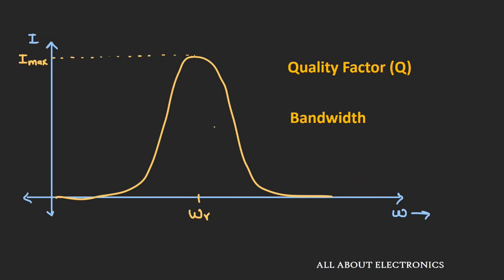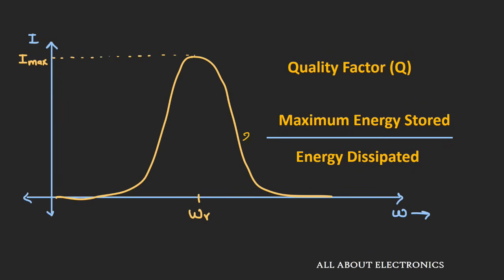Let's see them one by one. First, let's talk about the quality factor. This quality factor is defined as 2π times the maximum amount of energy stored across the element in the circuit, divided by the energy dissipated across the resistor. As we already know, as the value of resistance increases, the circuit will have less tendency to oscillate, and the resonant curve will get wider. So basically, this quality factor defines the sharpness of the resonant curve, or simply the selectivity of the series RLC circuit. We will derive the expression for this quality factor in terms of R, L, and C later.